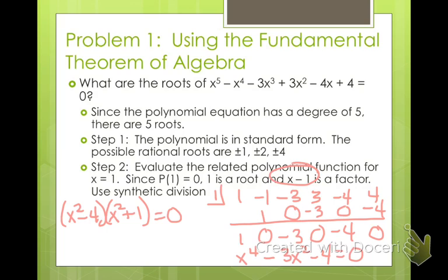Now we can set each one of these equal to 0. So x squared minus 4 equals 0. Add 4 to both sides. x squared is 4, square root. x is 2 and negative 2. And then x squared equals negative 1, square root. x is i and negative i.